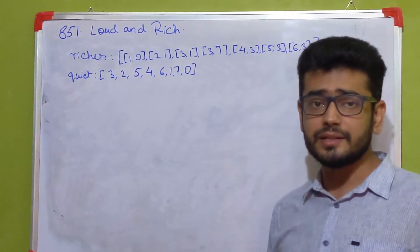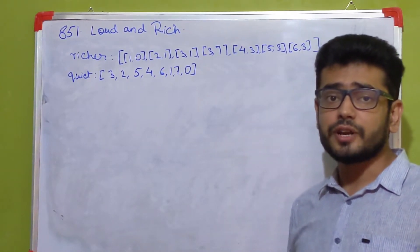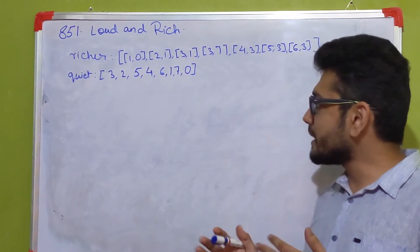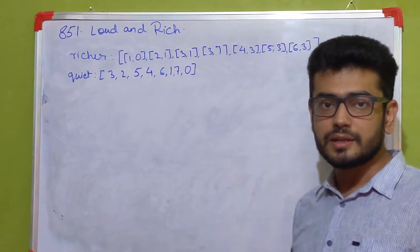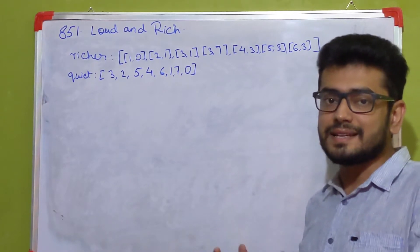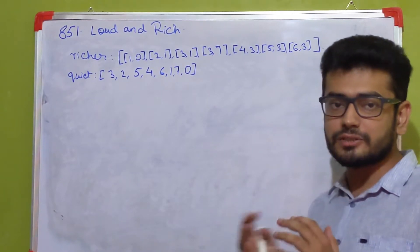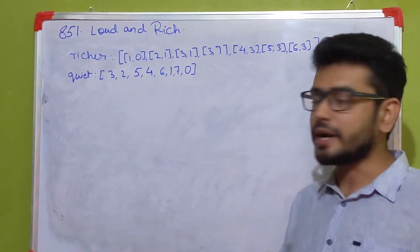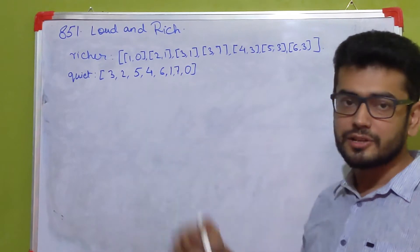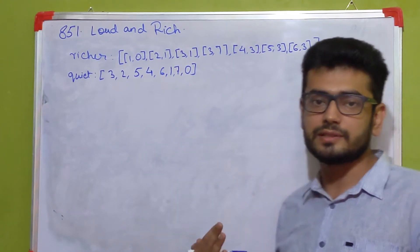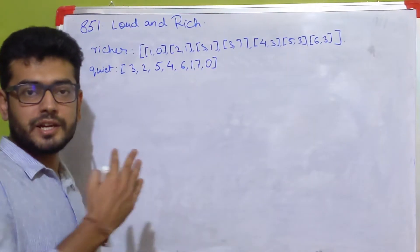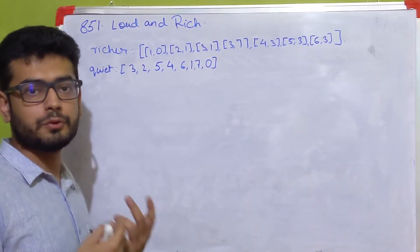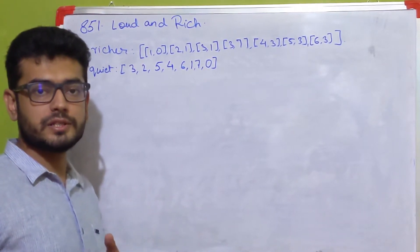What you need to find in this question is, for each of the people numbered from 0 to n-1, who is the loudest person who is at least as rich as that person. The loudest person is the person having the least amount of quietness value. So if we see the richer array carefully, we understand that it is a representation of two persons in terms of who is richer than whom.